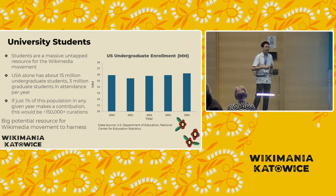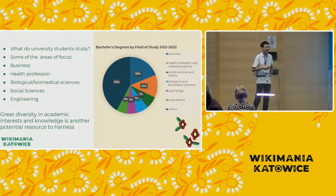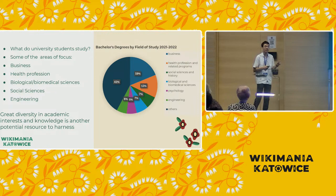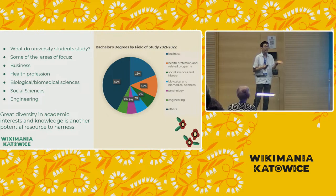It's also important to talk about what university students are studying. Their academic interests are very diverse. As you can see from this pie chart of bachelor's degrees by field of study in the 2021 to 2022 academic year in the United States, over 40% of students studied something other than more established topic areas such as engineering. This great diversity in academic interests and knowledge illustrates the vast amount of knowledge that students have, further highlighting them as a massive potential resource.